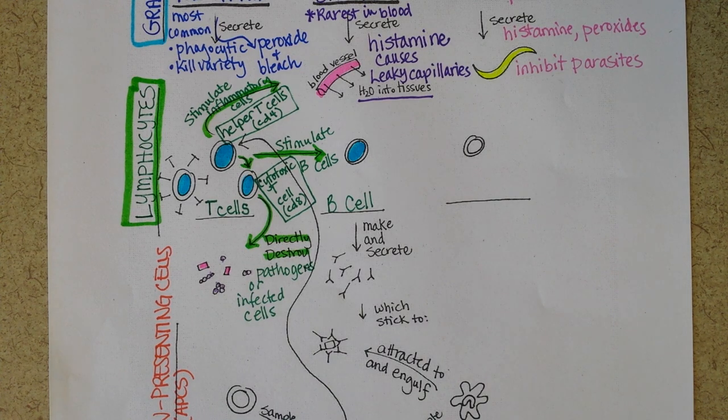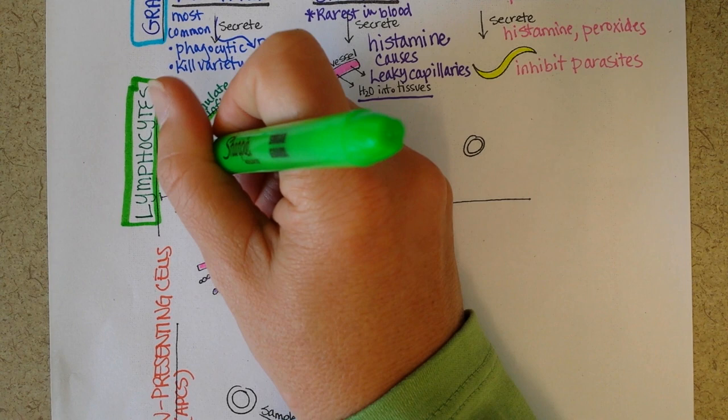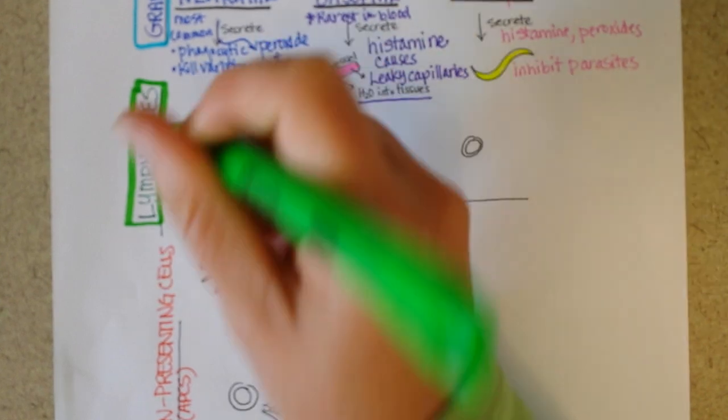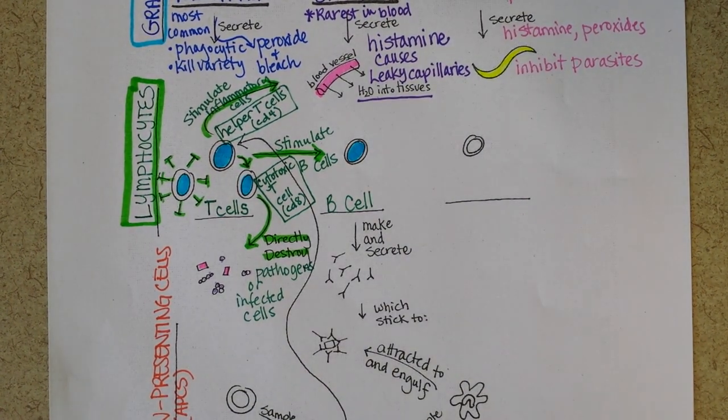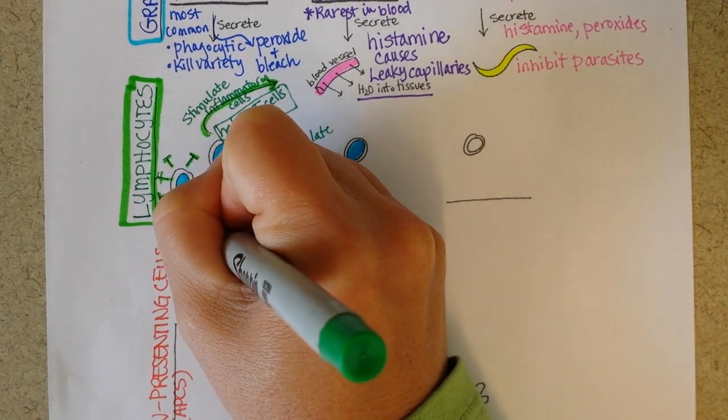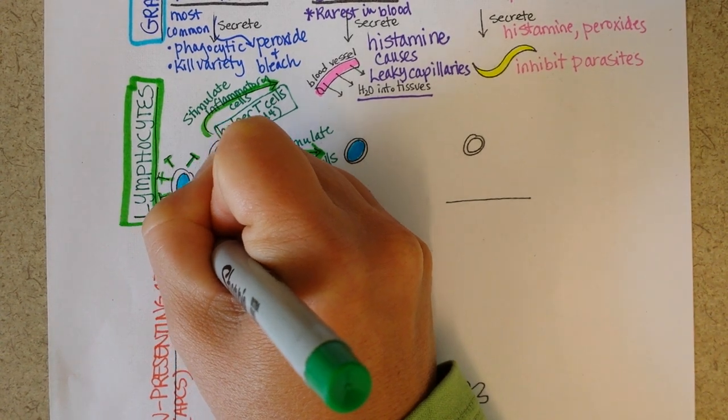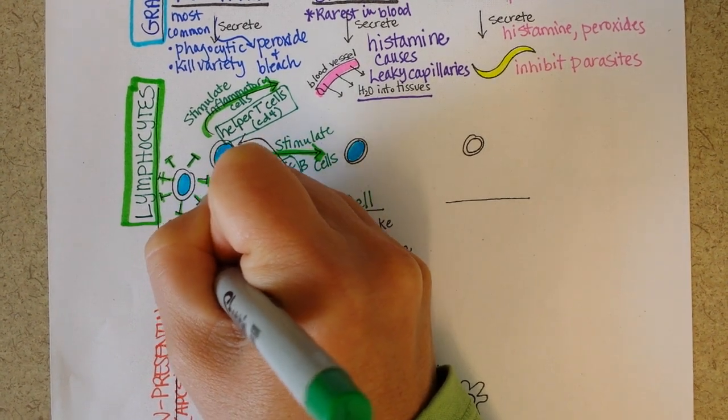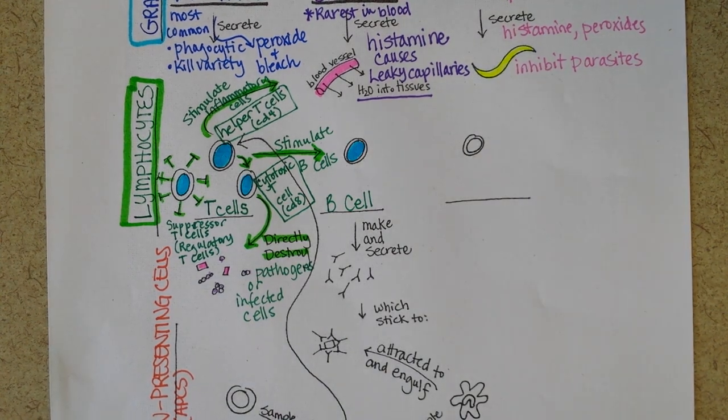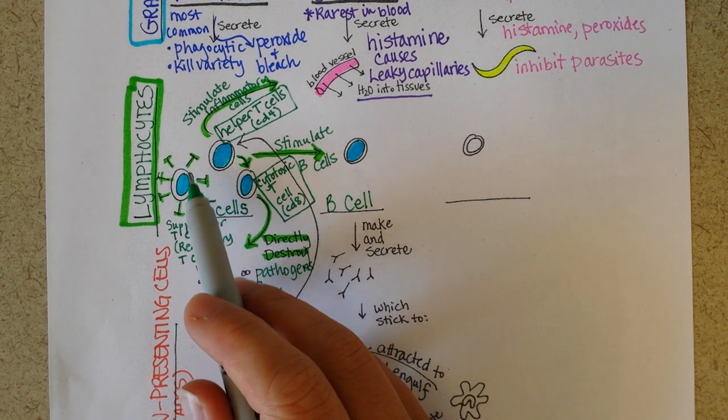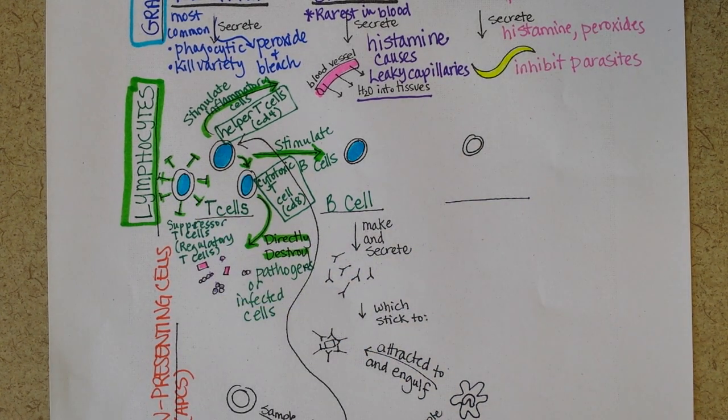And then it's time for suppressor T cells to get involved. They turn off the reaction after the invader is neutralized. Sometimes now they're calling them regulatory T cells. Their job is to inhibit further immune response. They seem to be important in preventing autoimmune reactions.